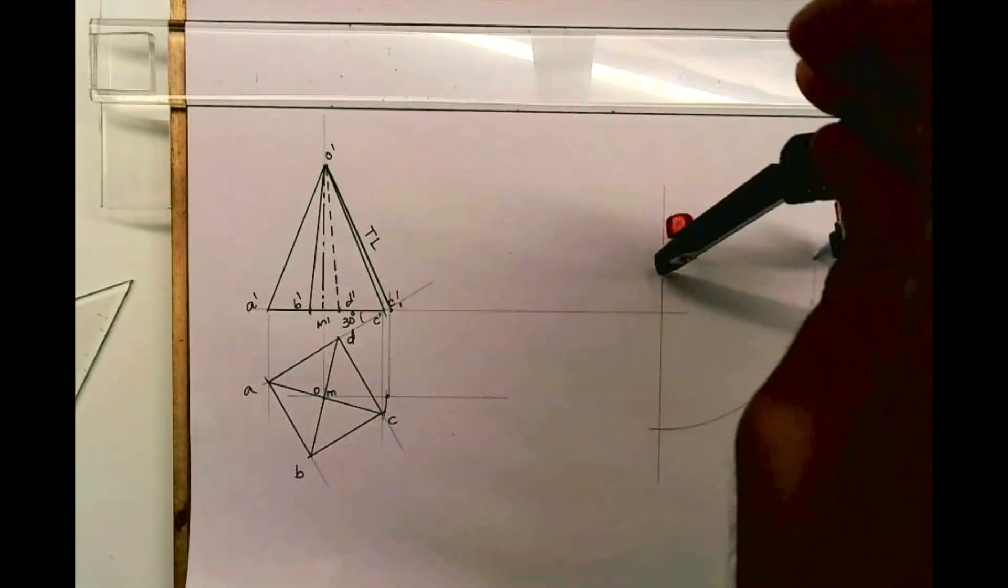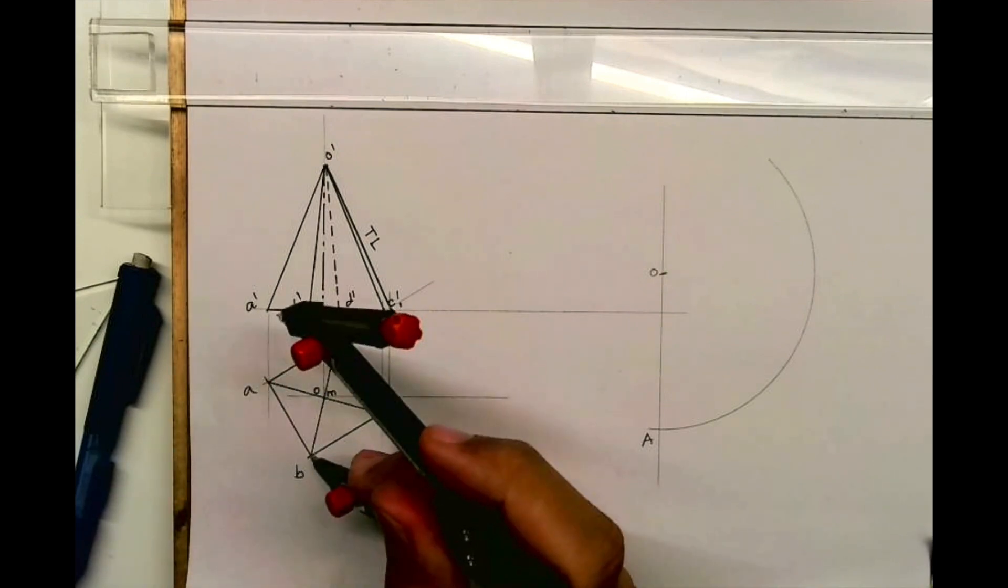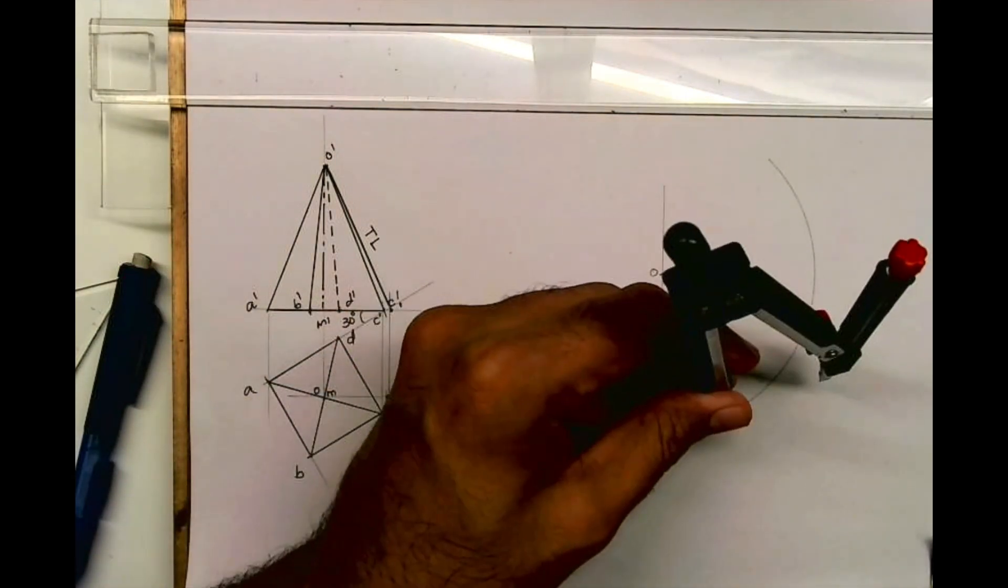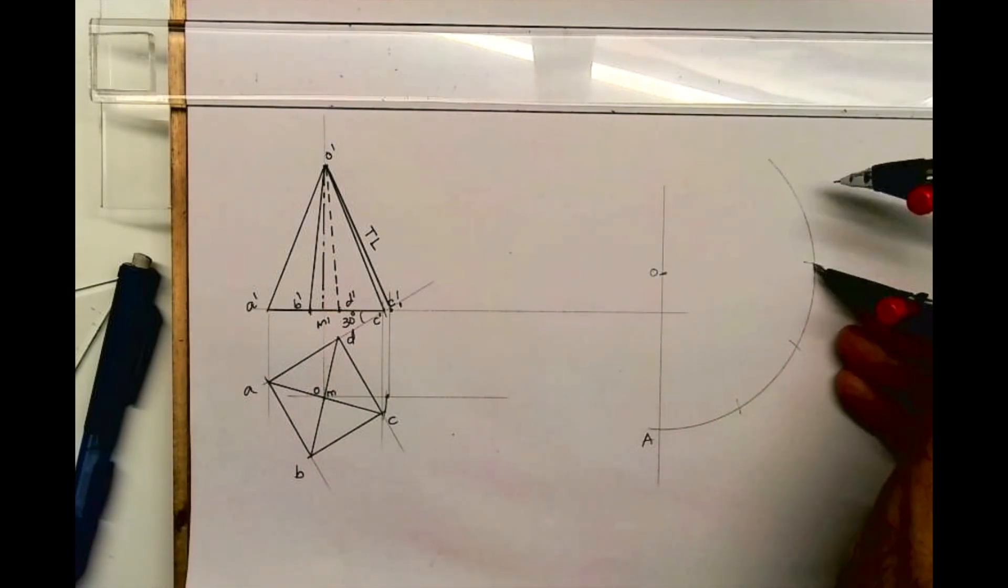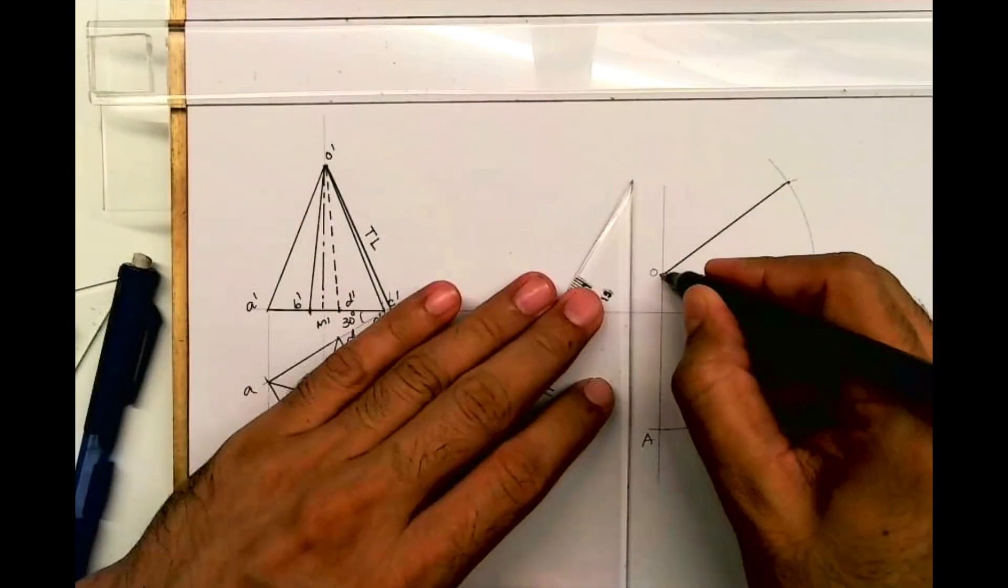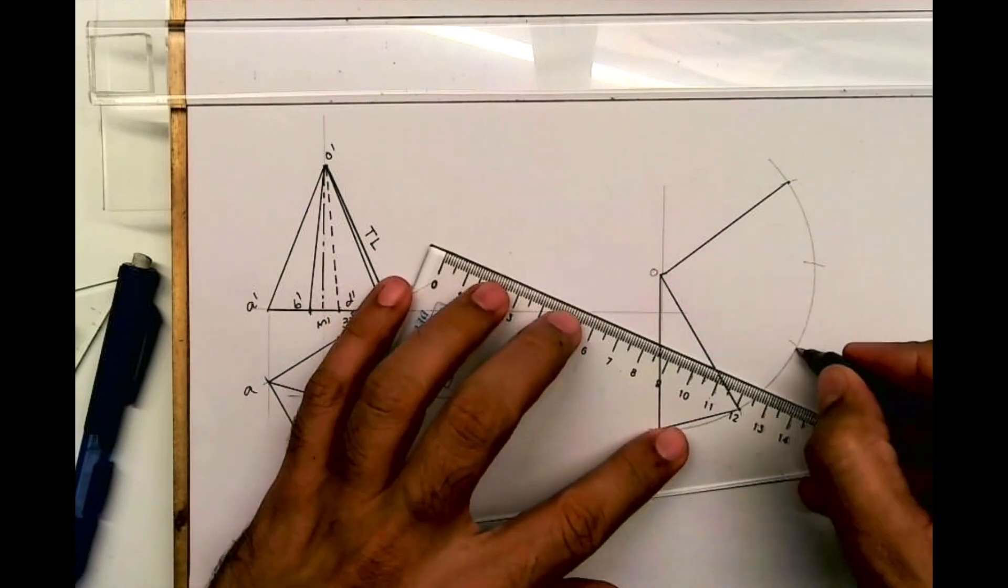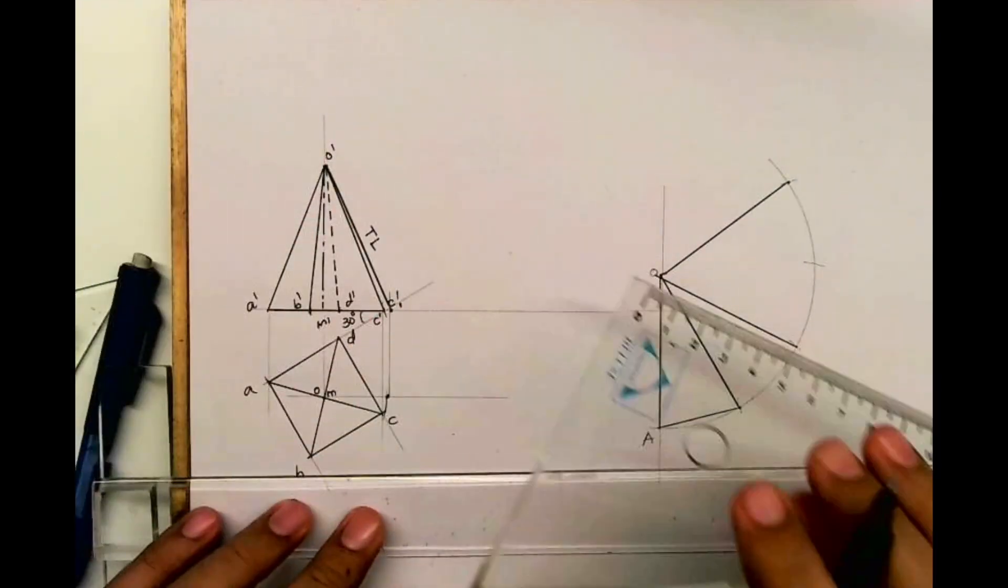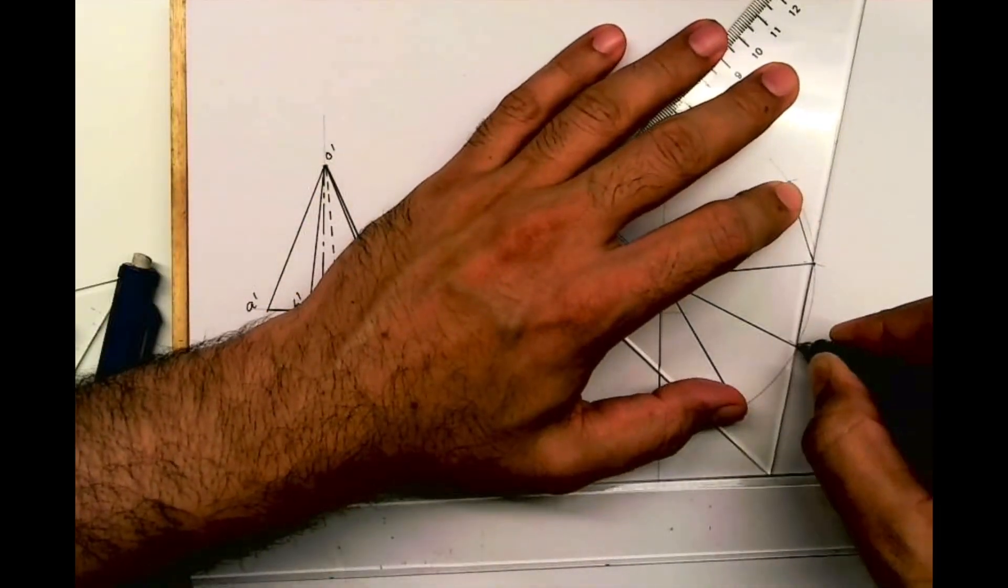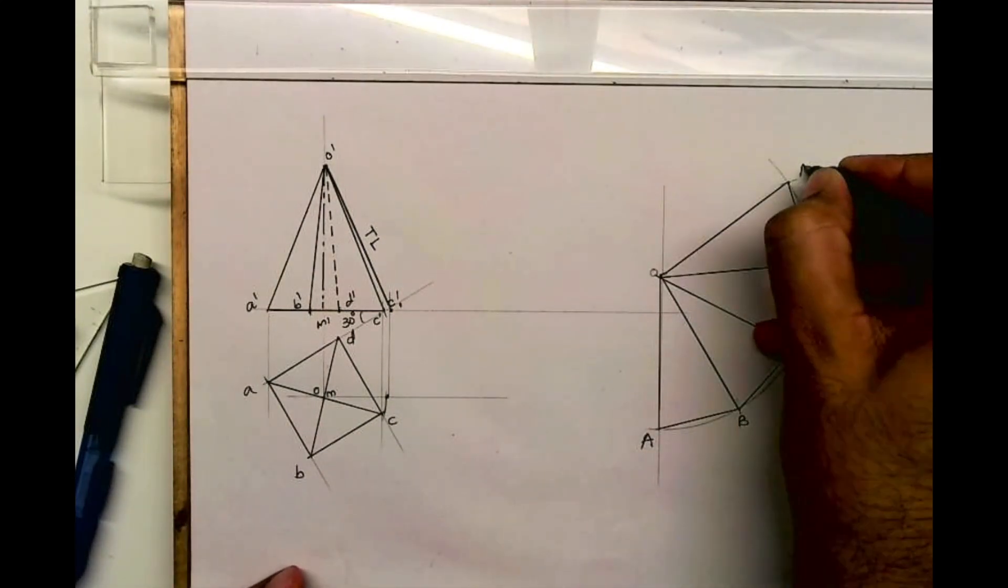This is O, this is A. Then we'll take AB and we'll cut, then BC, CD, and DA. All four sides are same so I'm cutting 30, 30, 30, and I'm joining this. So I got development. Remember in this case OC was inclined so that's why we had to rotate for development. In this we write capital.